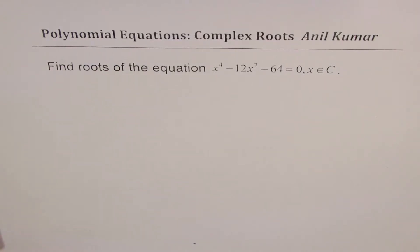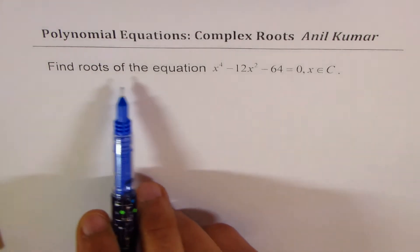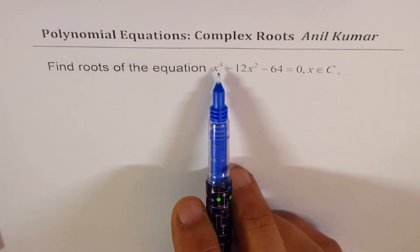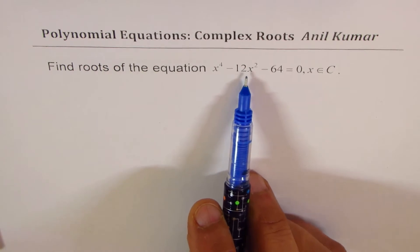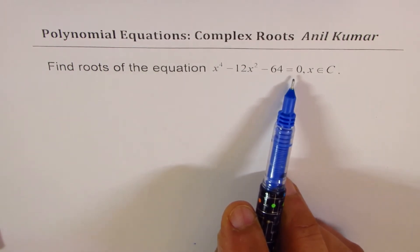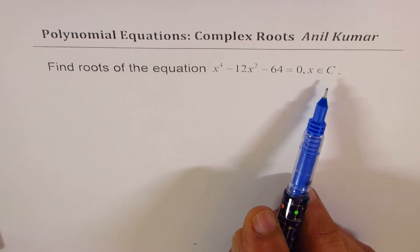I'm Adil Kumar, sharing with you a polynomial equation. We'll find the roots of the equation in the domain of complex numbers. The question is: find roots of the equation x to the power of 4 minus 12x squared minus 64 equals to 0, when x belongs to complex numbers.